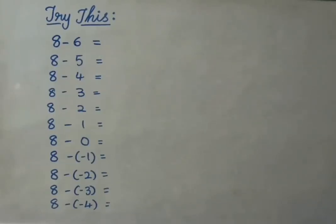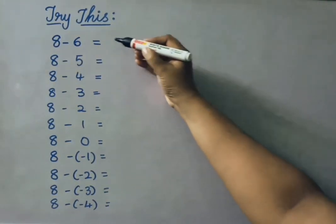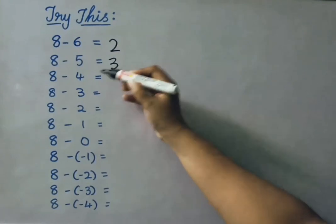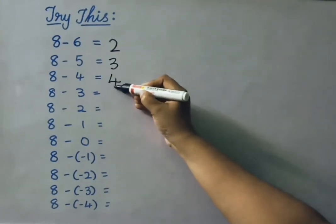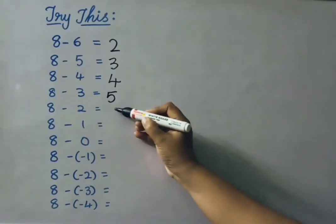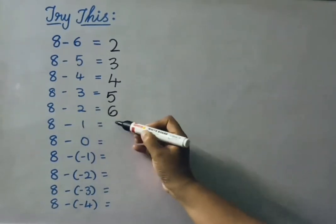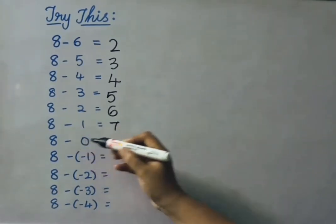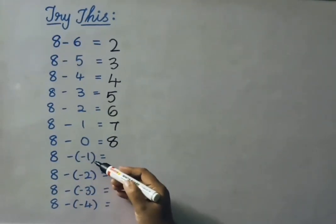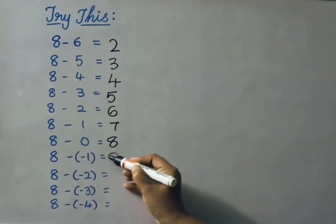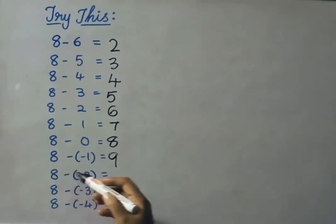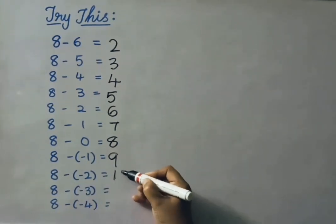See the 'try this' now. 8 minus 6 is 2. 8 minus 5 is 3. 8 minus 4 is 4. 8 minus 3 is 5. 8 minus 2 is 6. 8 minus 1 is 7. 8 minus 0 is 8. 8 minus of minus 1 — that is 9. 8 minus of minus 2 — that means 8 plus 2, that is 10.